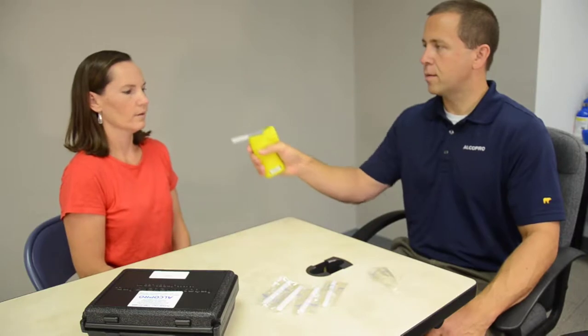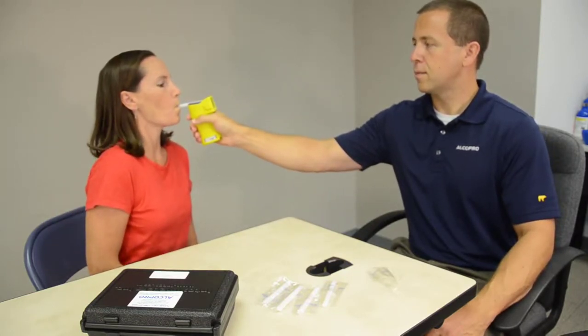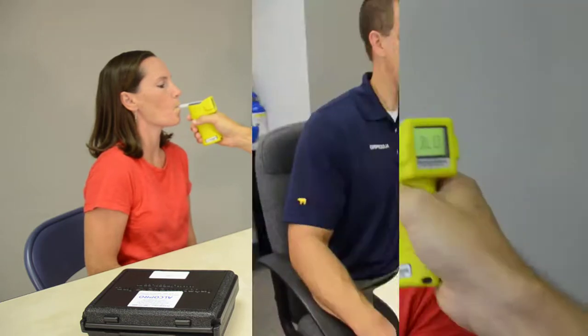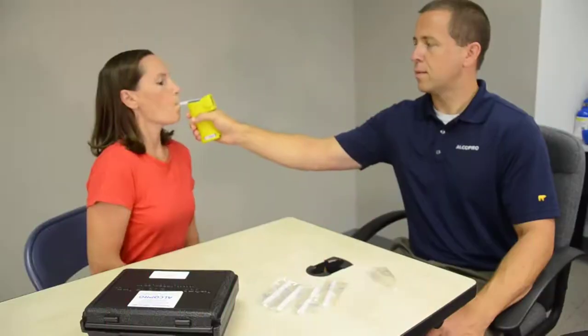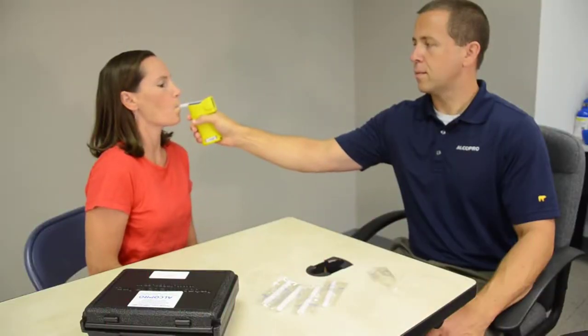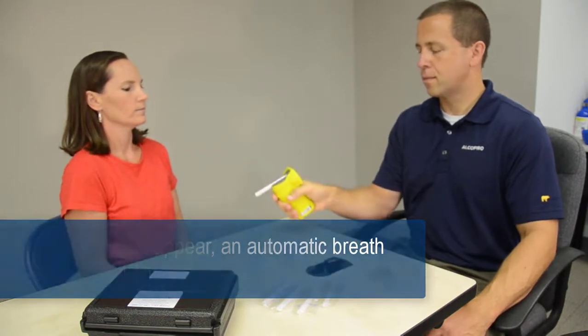Instruct your subject on the proper procedure for providing a breath sample. As the subject provides a deep lung breath sample, the icon of the head stops flashing, and a dash appears to the right of the head, indicating the device senses a sufficient breath flow. Once three dashes appear, an automatic breath sample is taken.